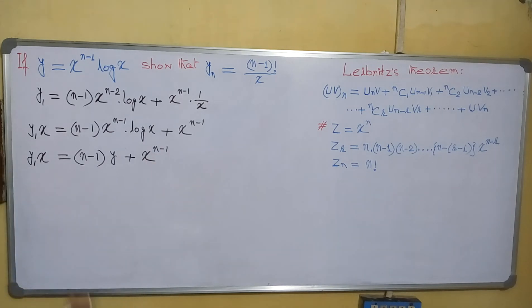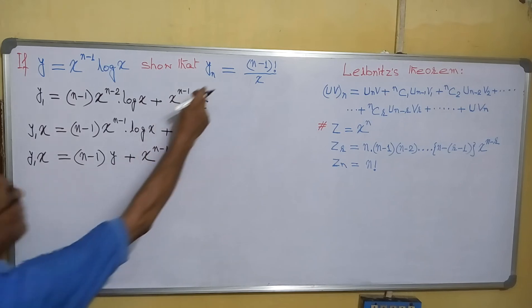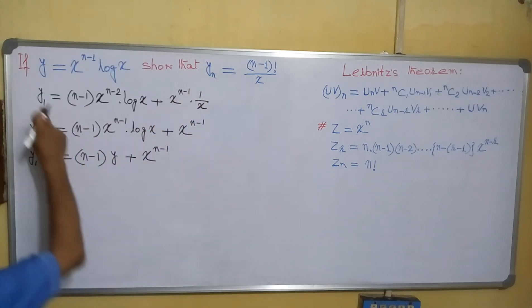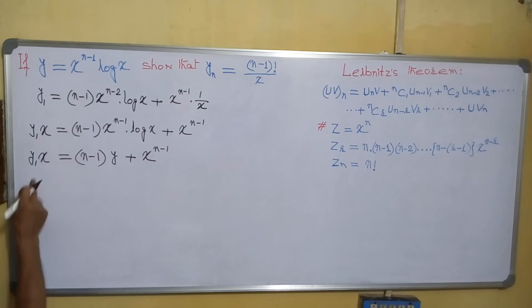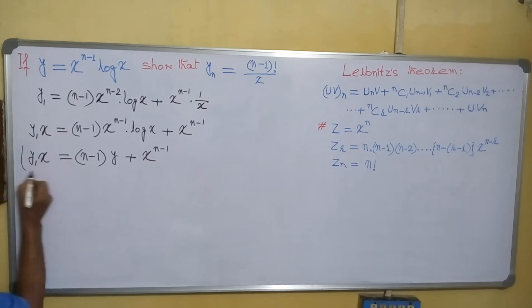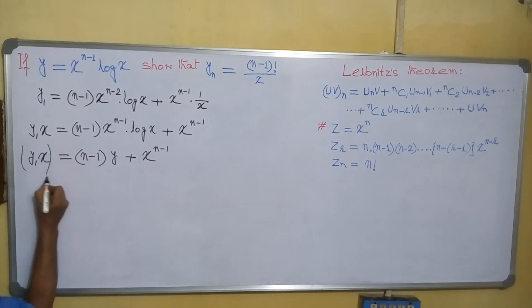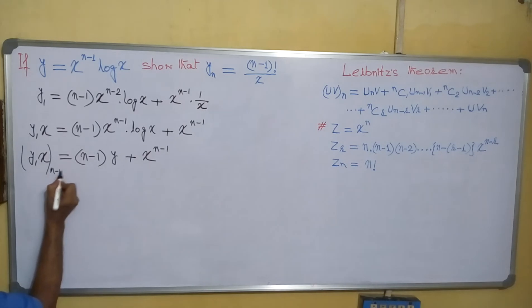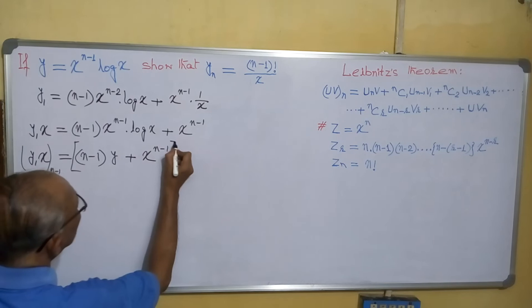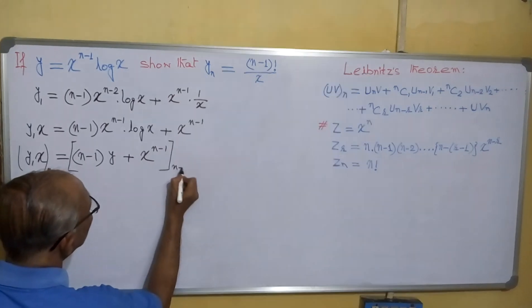Now, we are supposed to find y_n, which means we have to differentiate y n times. Since we have already differentiated once, we have to differentiate further n minus 1 times. So we can write this expression's n minus 1 derivative equals the other side's n minus 1 derivative.